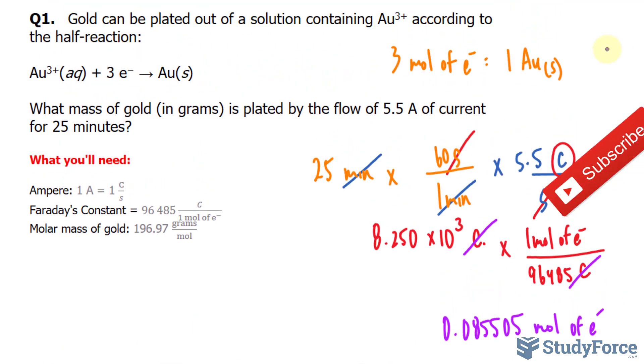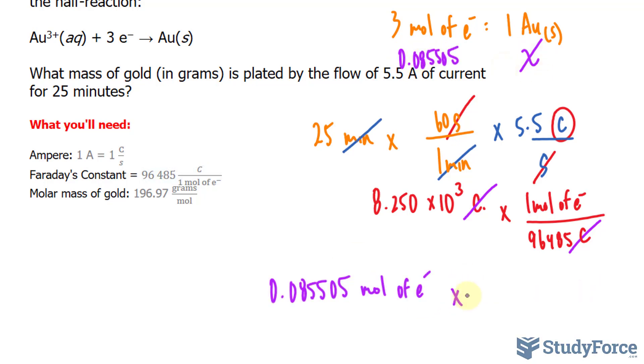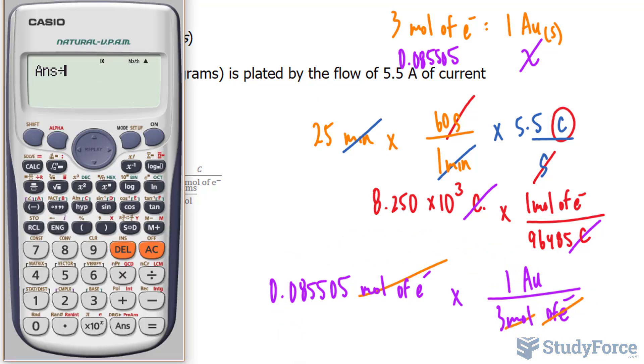Now, we're told that it's a 3 to 1 ratio. So pretend that we took this number and we placed it right here and we found out what x was. So really quickly, we're looking for what x is, or you can simply take this number and multiply it by 3 moles of electrons per 1 mole of Au. This will cancel out that unit and we'll go ahead and divide that number by 3.